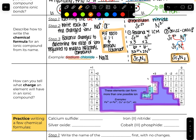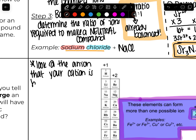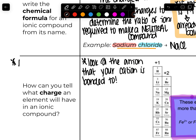What about elements in the transition metal block — the periwinkle section on the periodic table? Those can experience multiple charges. You have to figure out what the charge on that ion is. How? Look at the anion that your cation is bonded to. Remember: anion charges don't change. They're reliable — they keep gaining electrons until their valence shell is filled. The only ones whose charge can change are those cations in the periwinkle region.